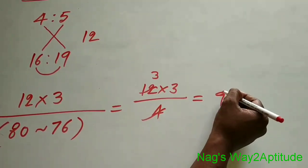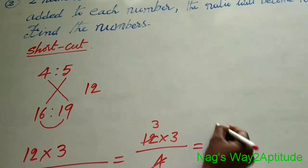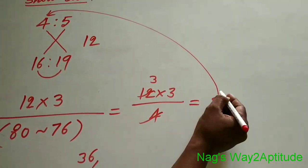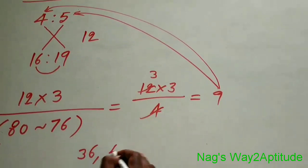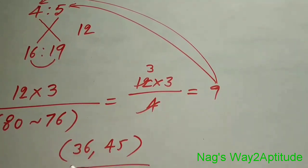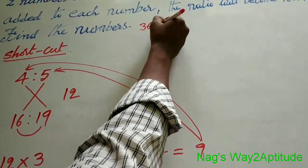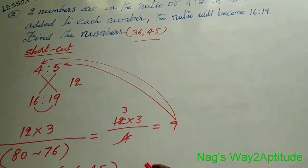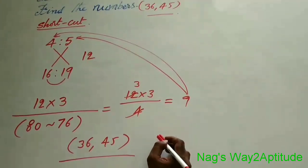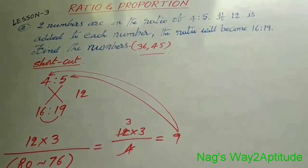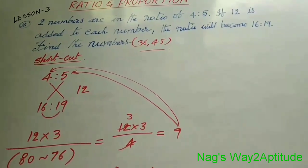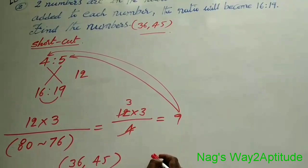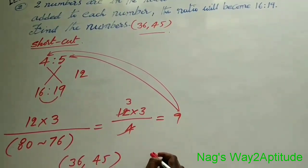Now you multiply 9 with each term of the original ratio. 9 fours are 36, and 9 fives are 45. Therefore, the numbers are 36 and 45. That's all for this lesson. If you find this video useful, please like it and share with your friends. If you have any doubts, please ask in the comment section and I will reply. To get more videos like this, please subscribe to our channel, Nox Way to Aptitude. Thank you very much.